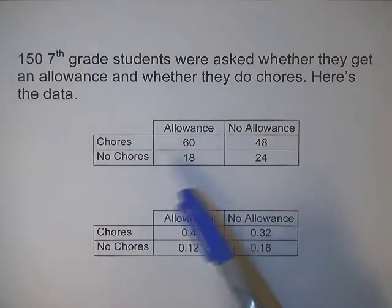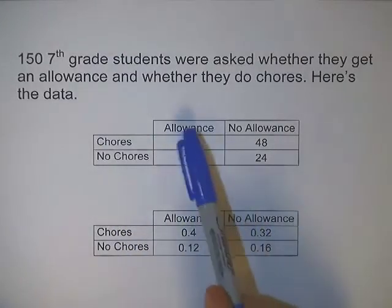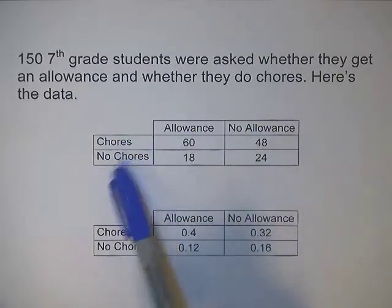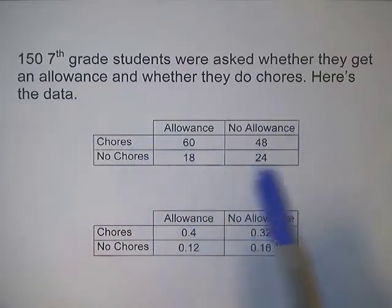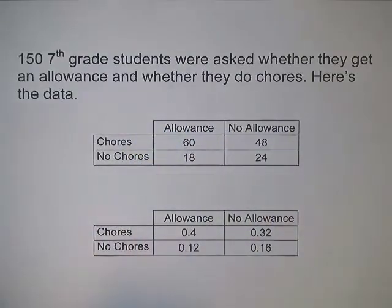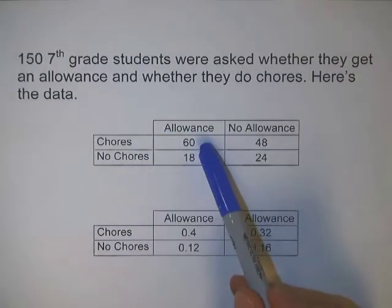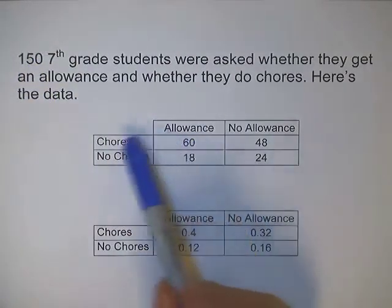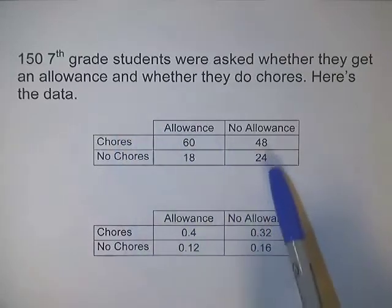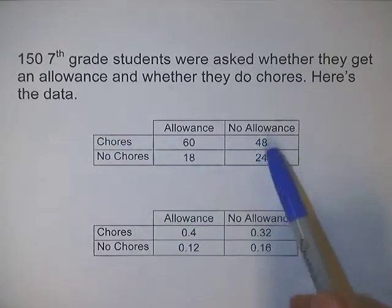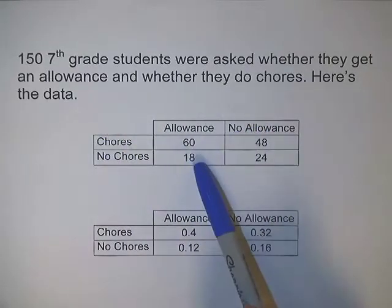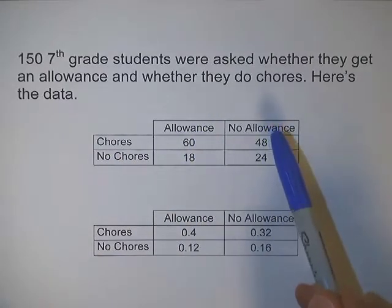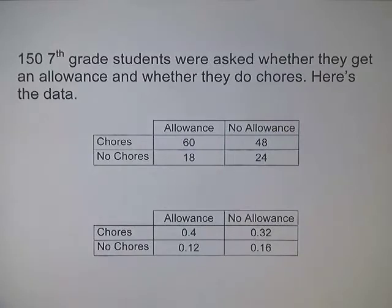We have this split up into two variables, each with two categories: allowance, no allowance, chores, no chores. This is called a contingency table or a two-way table. The 60 means there are 60 out of 150 students that get an allowance and also do chores. There were 48 that do chores but do not get an allowance, 18 that get an allowance but don't do chores, and 24 that don't do chores and do not get an allowance.